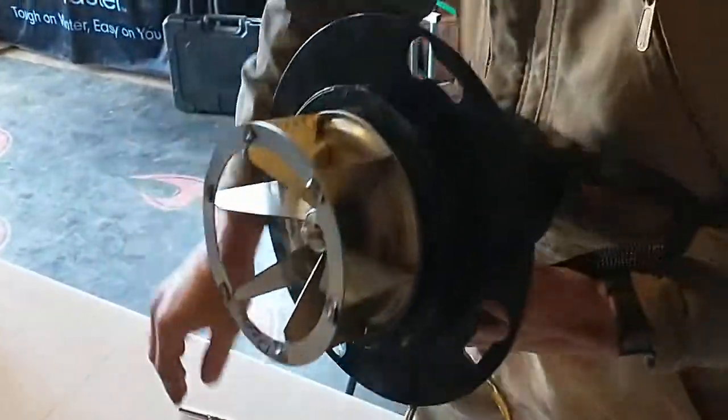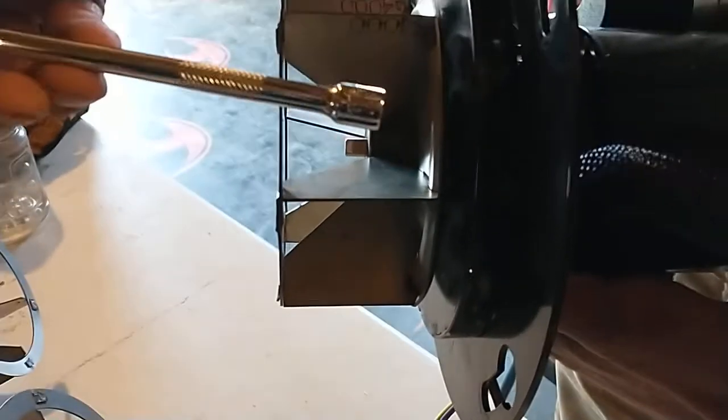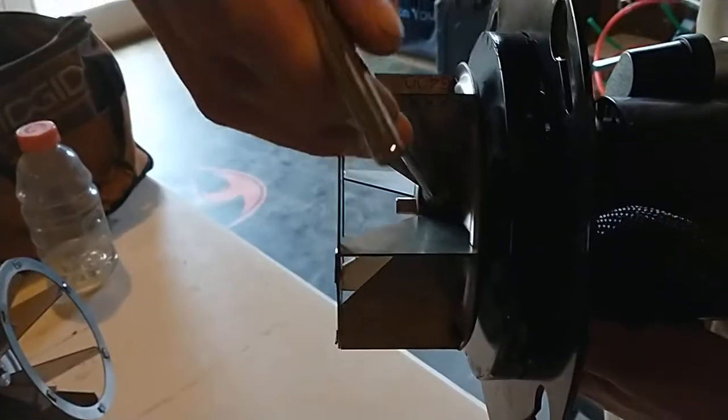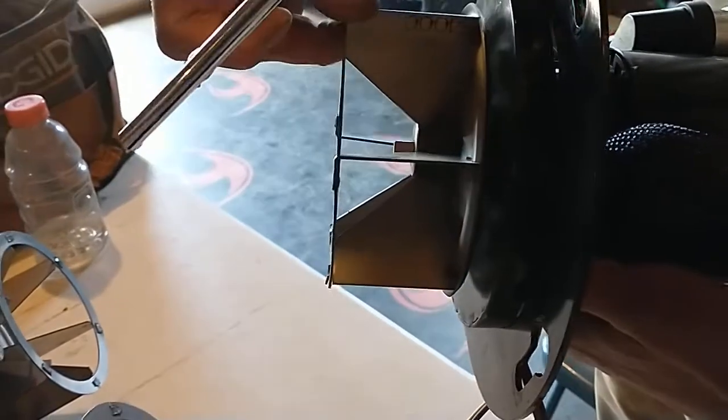The wheel is attached with a square set screw that clamps on the flat side of the shaft. This is a quarter inch extension that we welded a handle to. It'll slide right over it, and you can loosen that set screw and slide the wheel off.